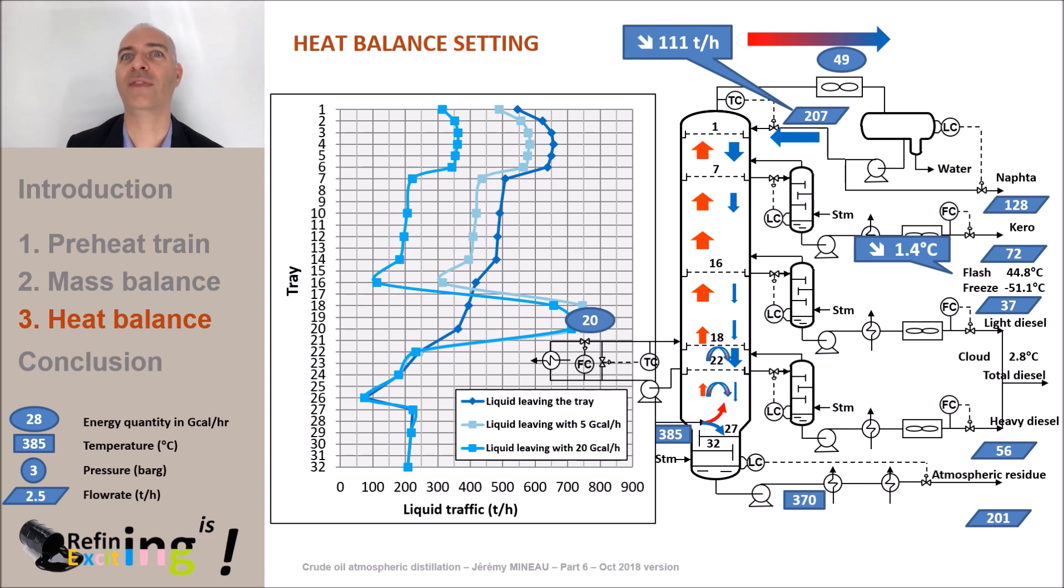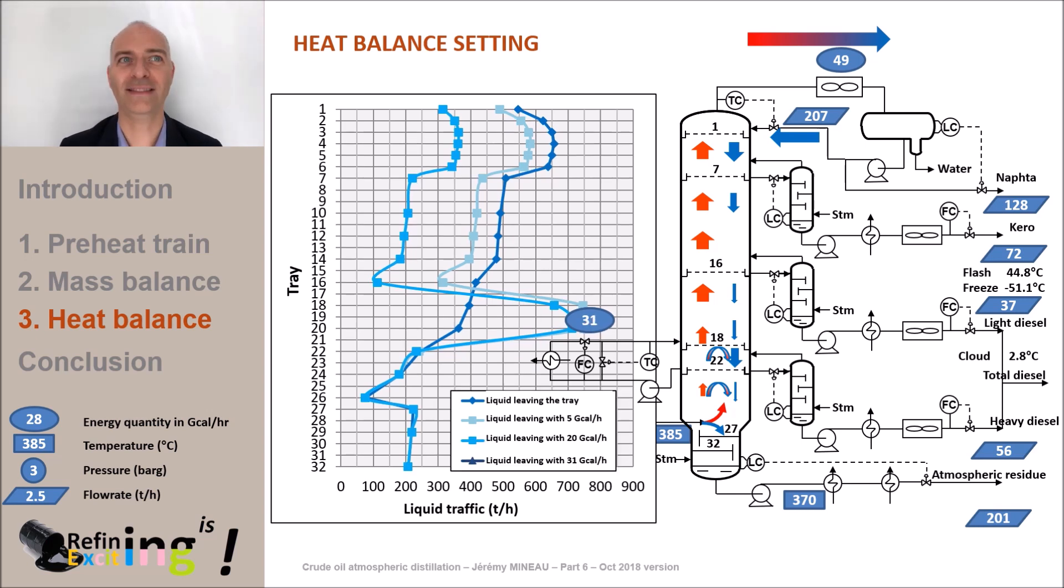Let's increase the amount of heat removed with the pump around to 31 giga calories per hour. At this value, so many calories have been removed that the liquid flow which arrives above the draw-off zone of the pump around becomes close to absolute zero, and we dry out the trays above the pump around zone. You can see it very well on the graph with the flow of liquid at the tray 16 which drops to zero. And this time, the kerosene flash point drops by 2 degrees C.